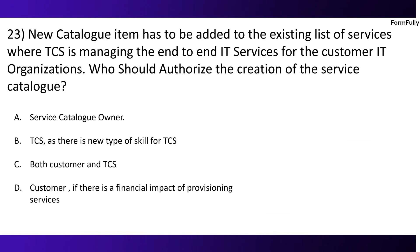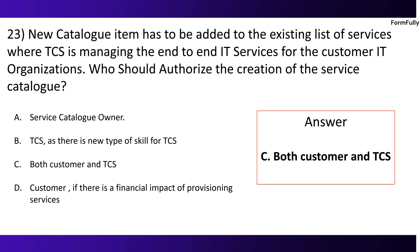Question 23. A new catalog item has to be added to the existing list of services where TCS is managing the end-to-end IT services for the customer IT organization. Who should authorize the creation of the service catalog? Option A: Service catalog owner. Option B: TCS, as there is a new type of skill for TCS. Option C: Both customer and TCS. Option D: Customer, if there is a financial impact of provisioning services. The correct option is C, both customer and TCS.